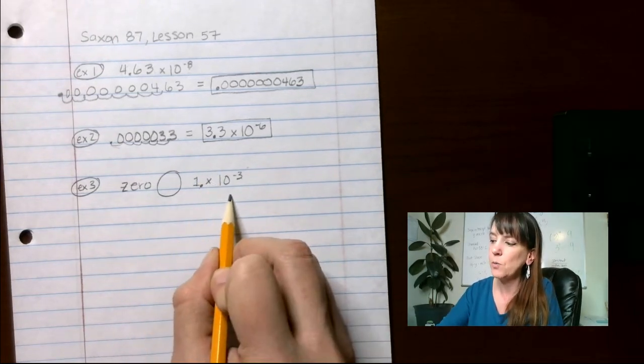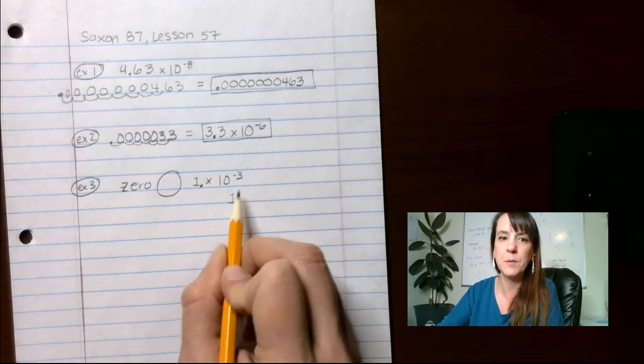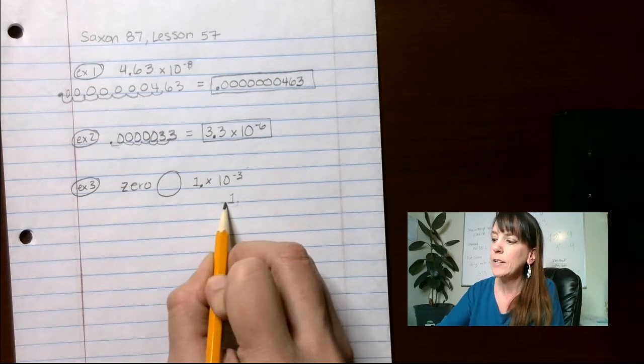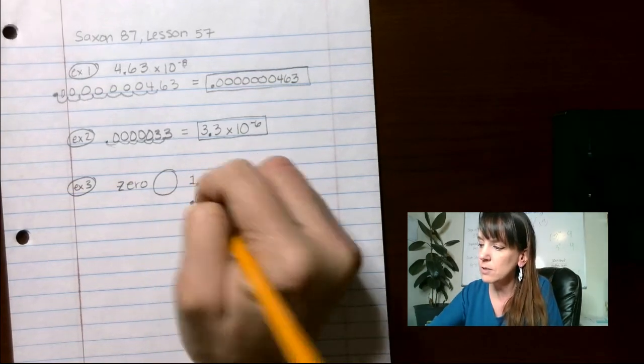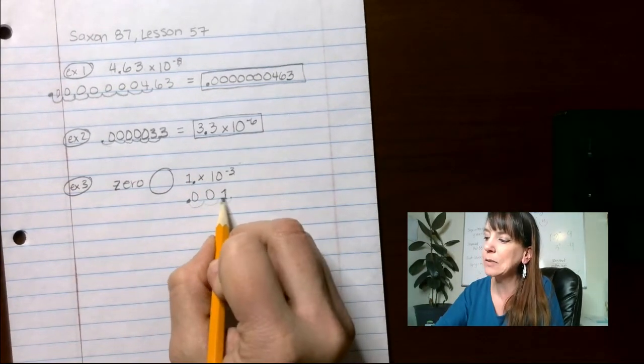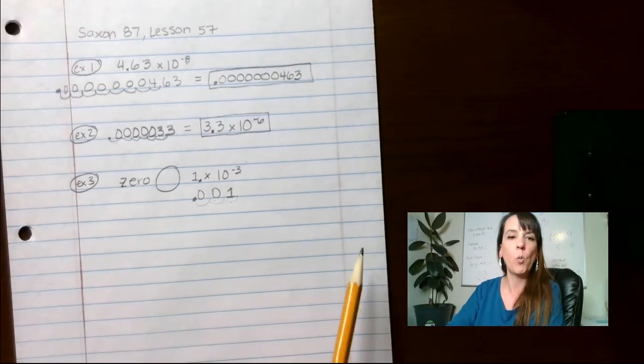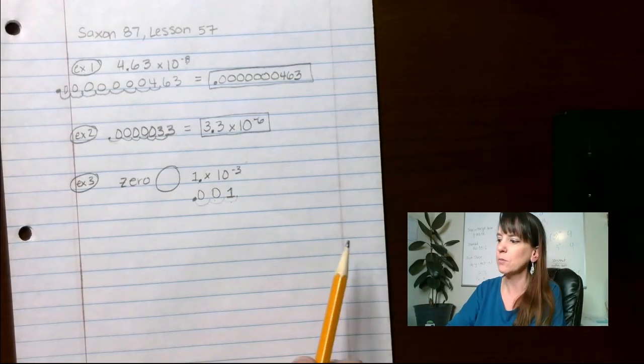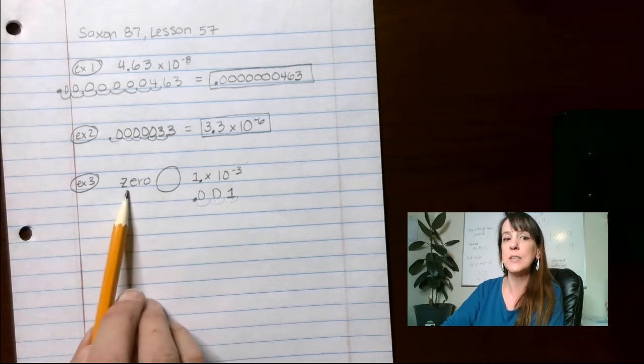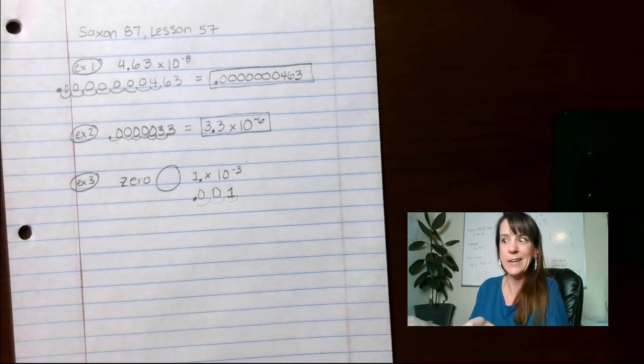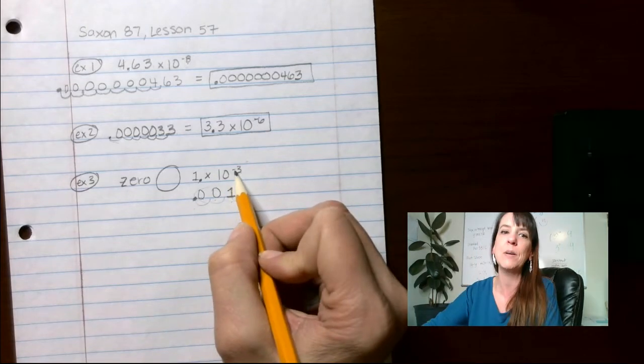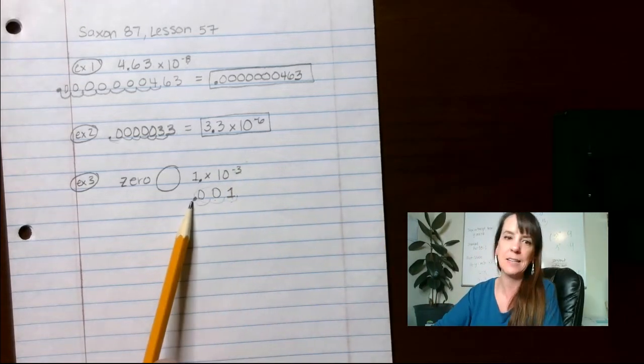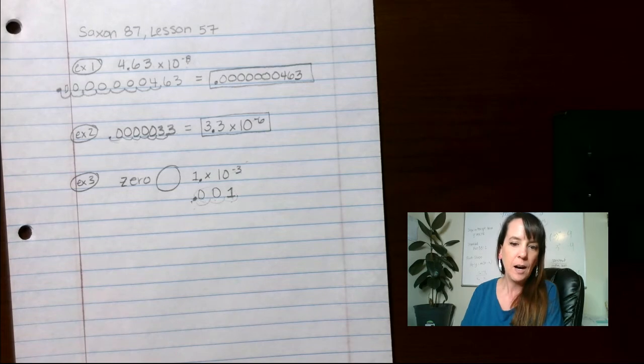Now, if I move it, I'm going to do 1. I'm going to start here. I'm going to move it 3 spots. 1, 2, 3. 1, 2. So I have 0.001 or 1 thousandth, right? Which is still going to be larger than 0. The only thing smaller than 0 are negative numbers. And there's no negative number involved here. Yes, there is a negative number here, but that does not mean that it's going to be in the front here.